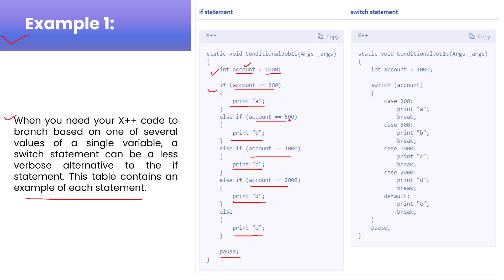You can see the number of lines of code increases with the if-else approach — you have to write if-else each time. You can reduce this using the switch statement. The same variable 'account' is used, and you can see the switch starts and ends with braces. Cases replace the if-else conditions: you give the keyword 'case' followed by the constant value.